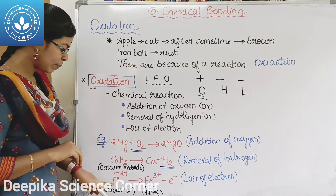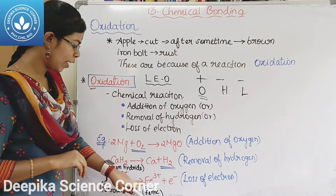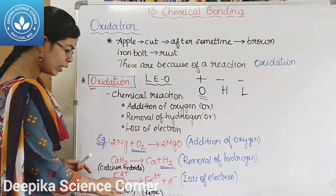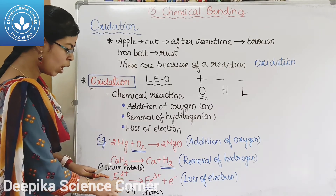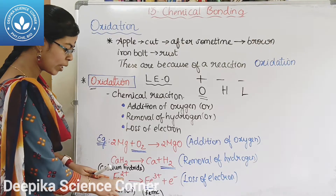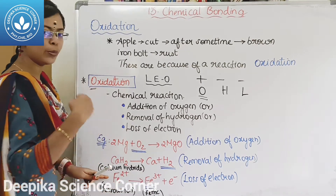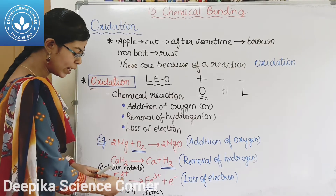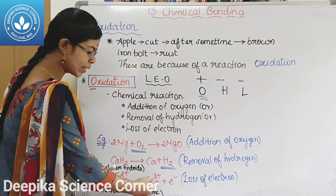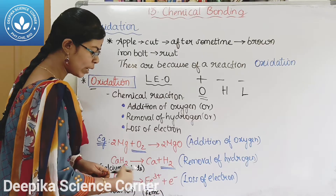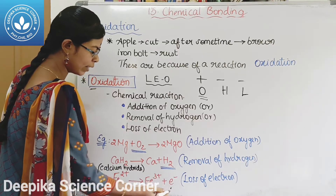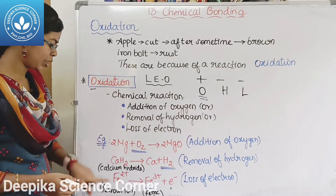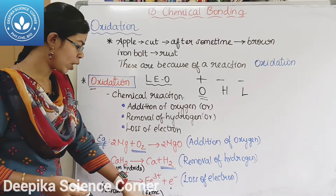Next example: Fe2+ gives Fe3+ plus e−. In this case, iron loses an electron, going from Fe2+ to Fe3+, the ferric ion. This is the oxidation reaction.